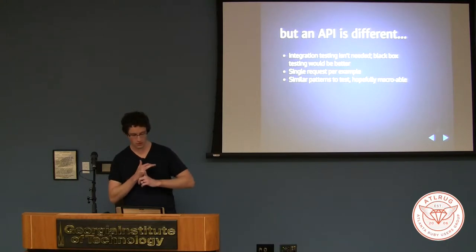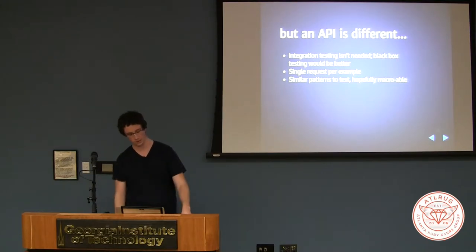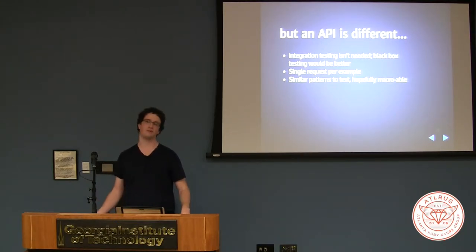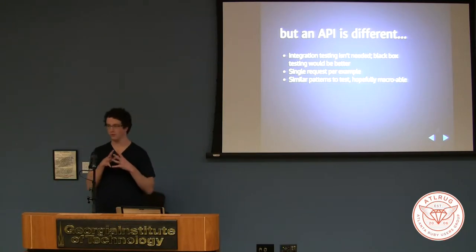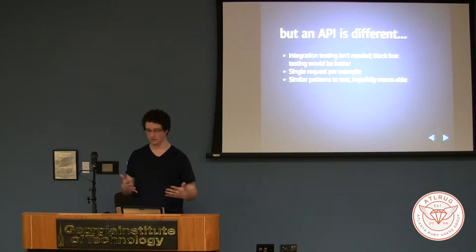The takeaways that we have: black box testing is better — something more like a model test, something that runs a single request. If you're testing multiple requests on JSON using an integration style test, you should probably do something different. And you want to have something that you can create macros from, because JSON has lots of shared tests that you're going to check.